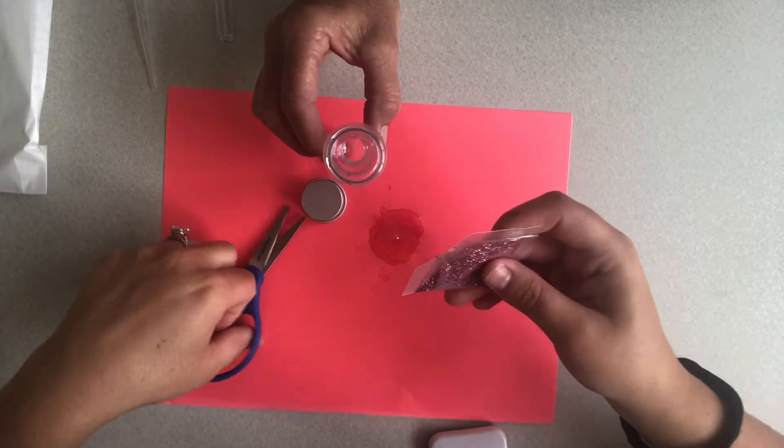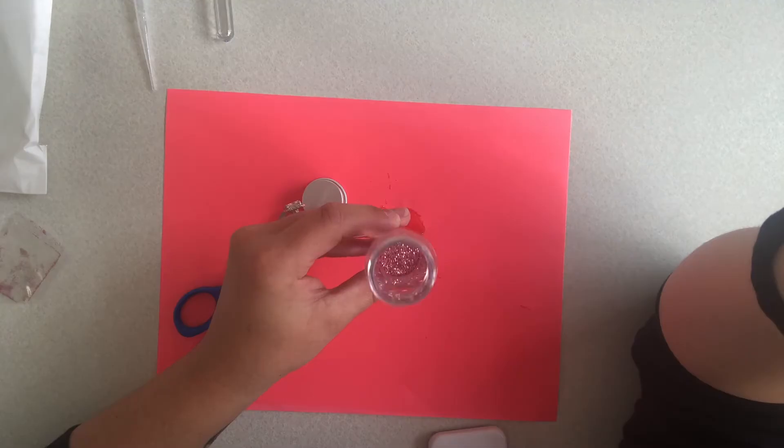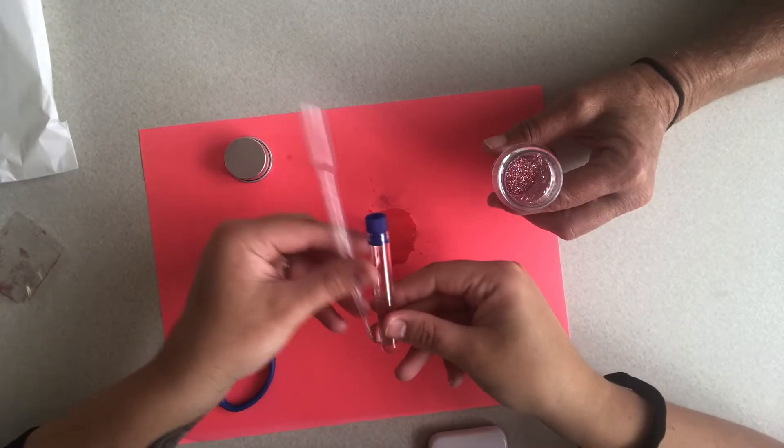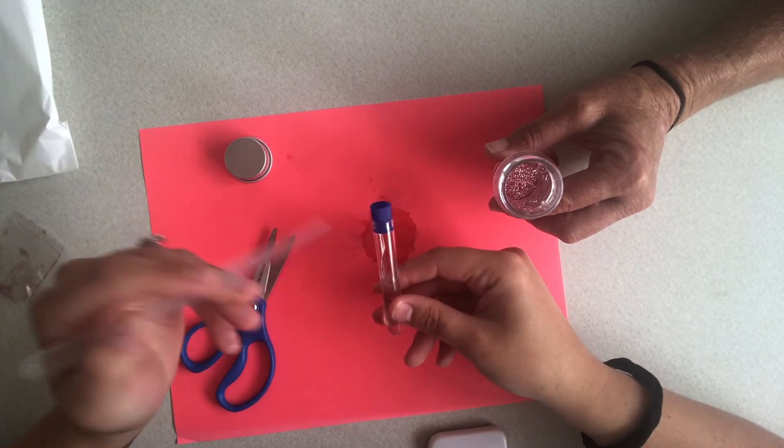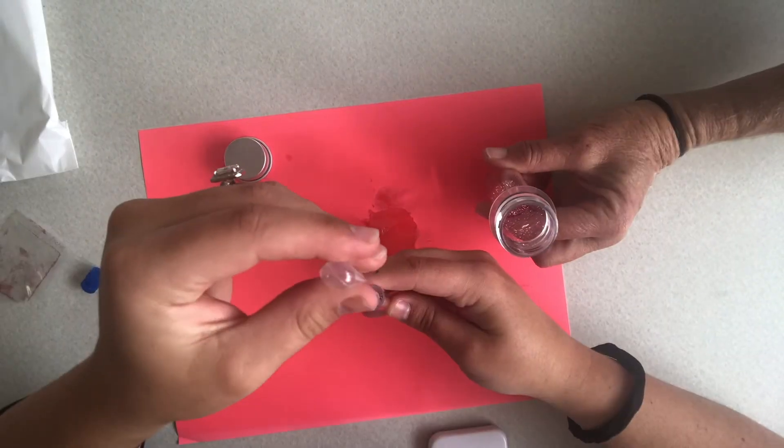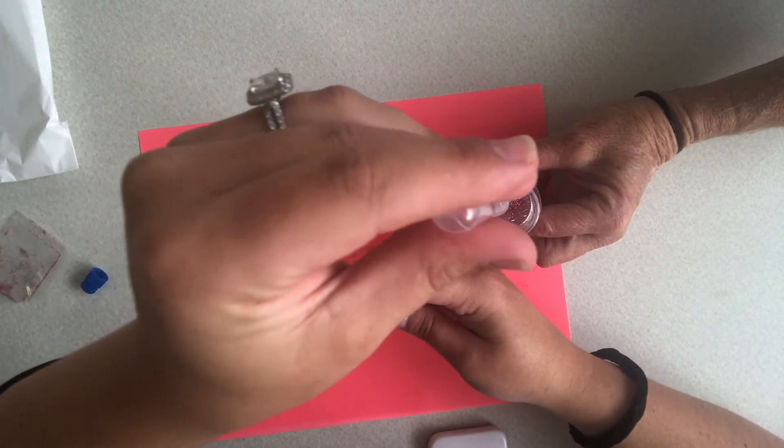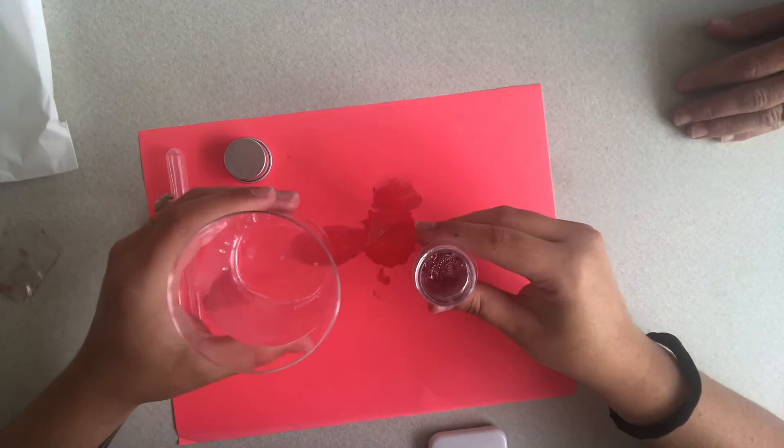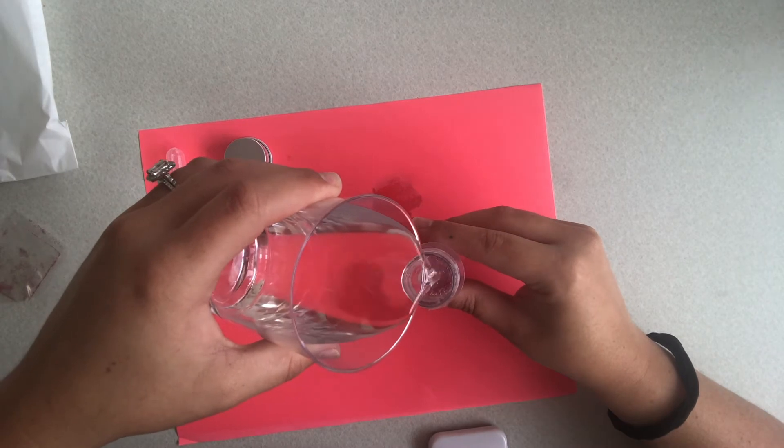Use the pipette to transfer the dish soap from the small test tube into the large test tube. Fill the test tube all the way to the top with water.